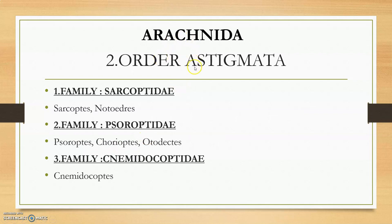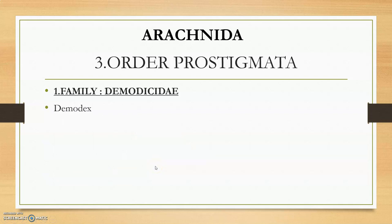The next order is Astigmata — these are also mites. We have 3 families: Sarcoptidae, Psoroptidae, and Knemidokoptidae. Sarcoptes and Notoedres belong to Sarcoptidae. Chorioptes and Otodectes belong to Psoroptidae. Knemidocoptes belongs to Knemidokoptidae.